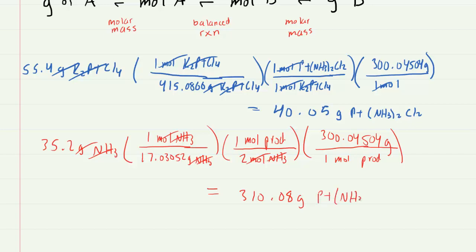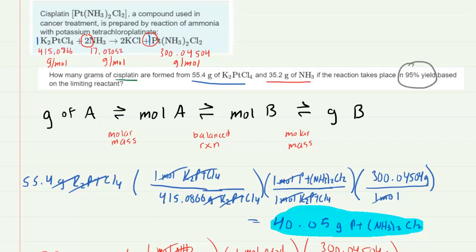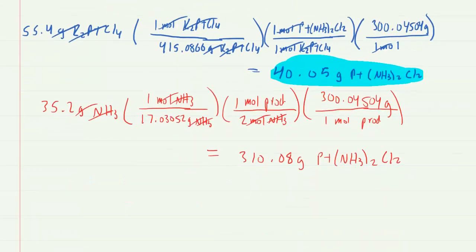Now of course we have to decide which number of grams of product is the correct one. It's a relatively easy choice to make because you're always going to select the smaller number of grams of product. You are essentially limited in how much product you can form based on the smallest possible amount calculated. So this is the amount we're focusing on, but let's not forget that we only have a 95 percent yield.